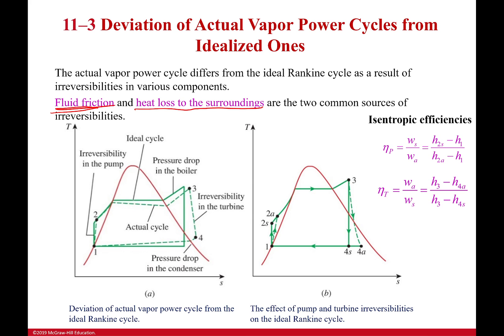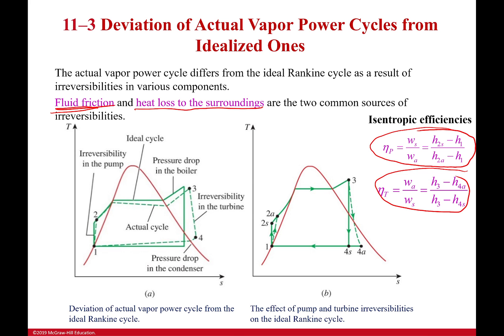These are isentropic efficiencies. They express the difference between my actual real-world result and the perfectly simplified isentropic version — 'A' for actual, 'S' for isentropic. Because of that difference, we're going to be losing energy that we could have had. These are two equations that are really important to write down and keep, as we'll use them in quite a few problems.